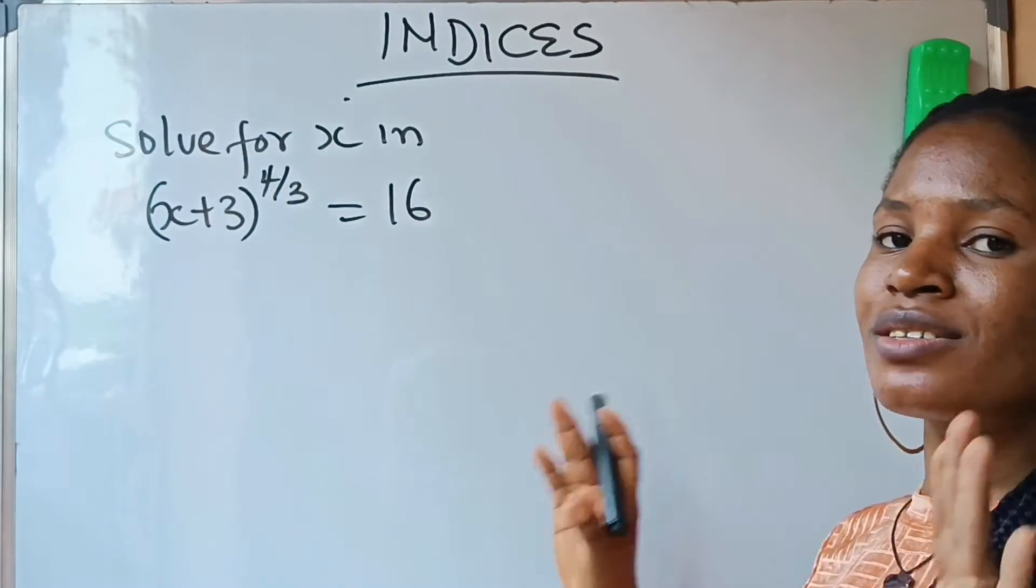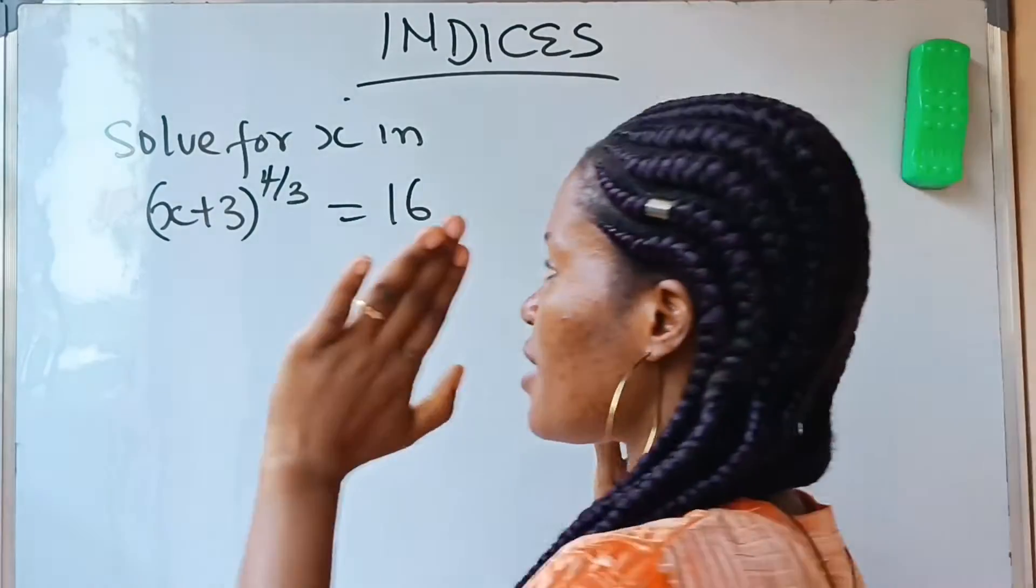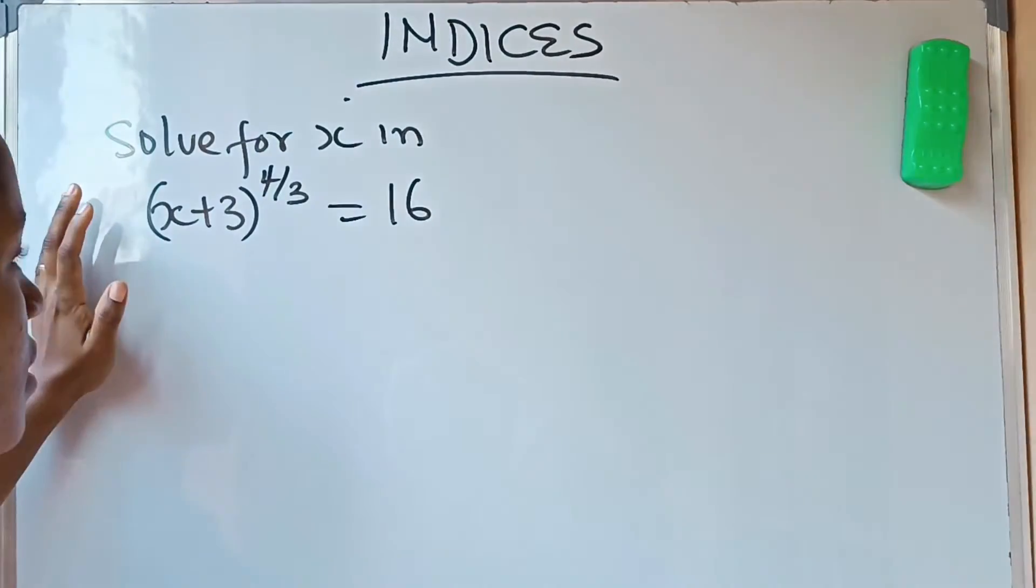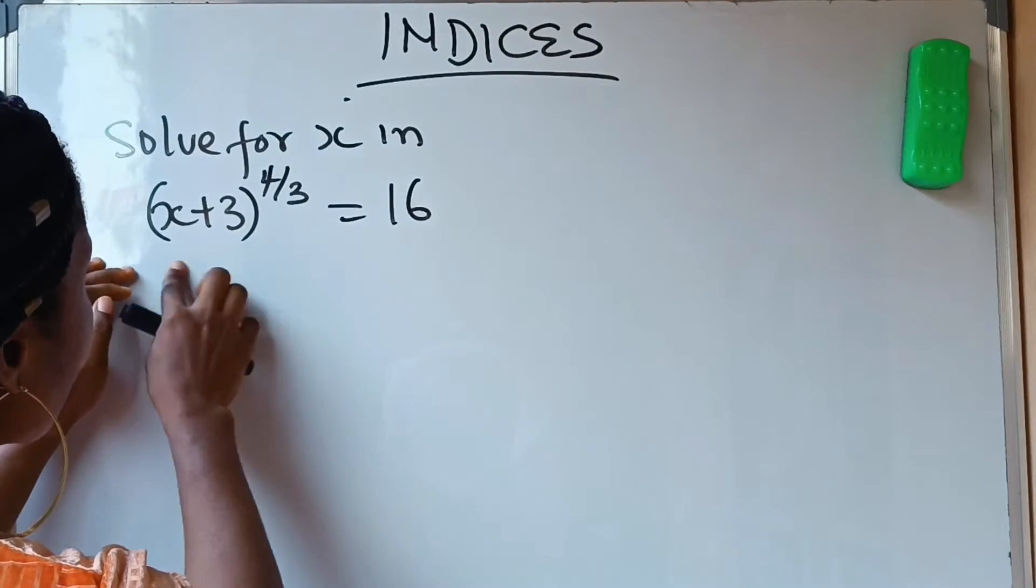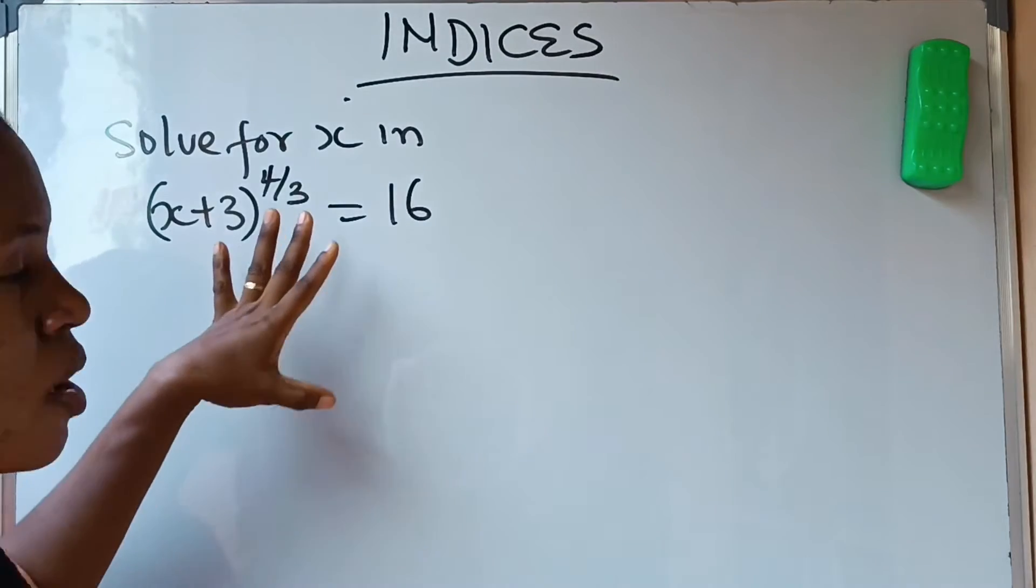Okay, this is under indices. What do we do? When you look at this particular question, you can analyze it this way: what do we do to have only x+3 here so that this particular question will look less ambiguous?